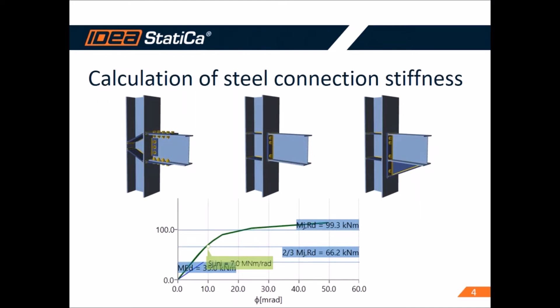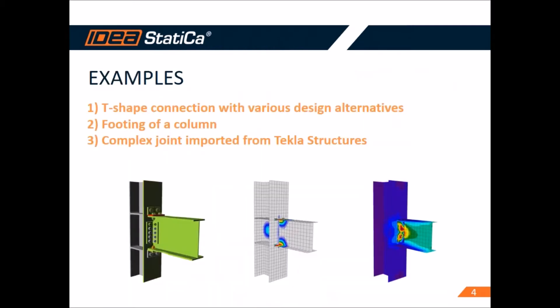Today's topic is focused on steel joint stiffness. As you probably know, the stiffness of a joint can have a big influence on redistribution of internal forces on beam members which are connected to a steel joint. That's why it is important to check joint stiffness in your global model analysis. IDEA Statica provides an automatic tool for steel joint stiffness — it is possible to get a complete stiffness diagram like shown on the screen.